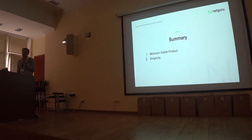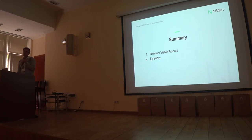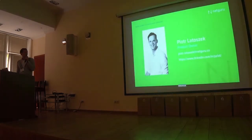To summarize: a minimum viable product is a concept of creating something small and getting as much information from the market as possible, gathering feedback and translating it into further product development. The second key takeaway is simplicity — keep everything simple, because even the most complex products were made out of simple ideas and simple steps. Thank you.